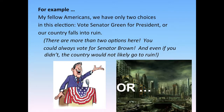For example: 'My fellow Americans, we have only two choices in this election — vote Senator Green for president, or our country falls into ruin.' There probably are more than two options. If you don't vote Senator Green, the only other choice is not necessarily that the country falls into ruin. Perhaps there are other candidates you could vote for. You can see why this false dichotomy is tempting to use — it really simplifies things by suggesting that if you don't do what the speaker recommends, the only other option is a really bad one.